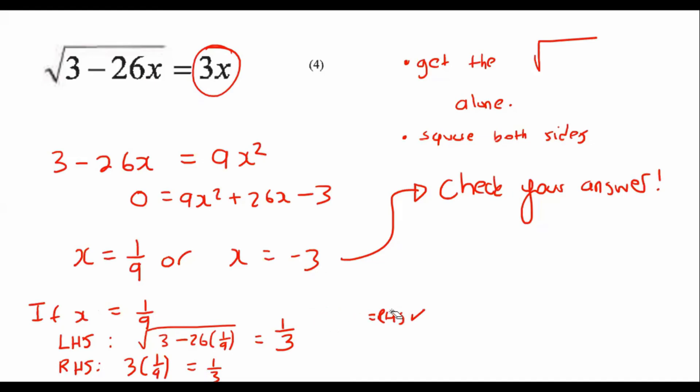Now what we do is we're going to check out this one. We're going to see what this one does, and so we can say if x equals to minus 3, then we can see that the left-hand side and then the right-hand side. So the left-hand side will be 3 minus 26 times by minus 3, and that gives us a value of 9.